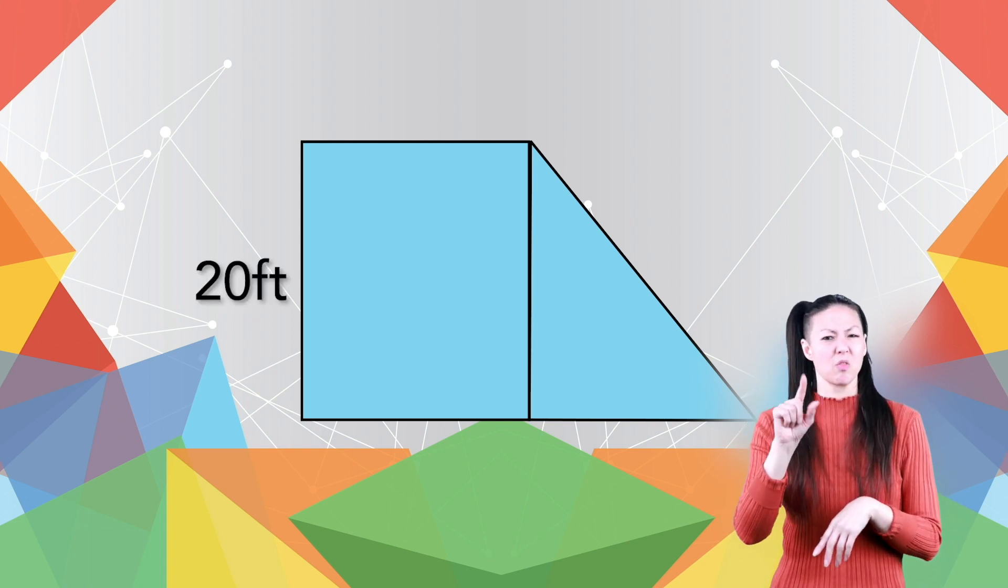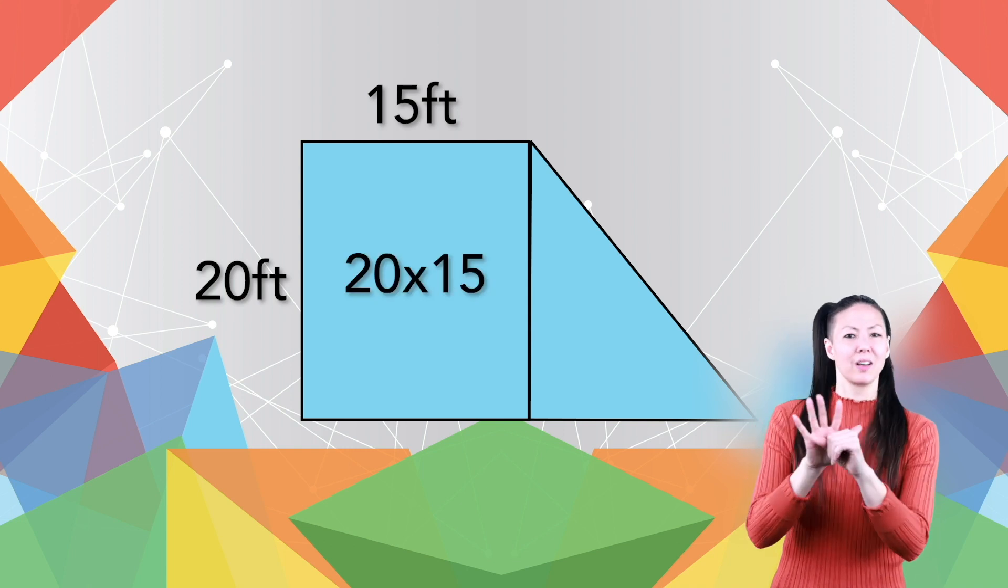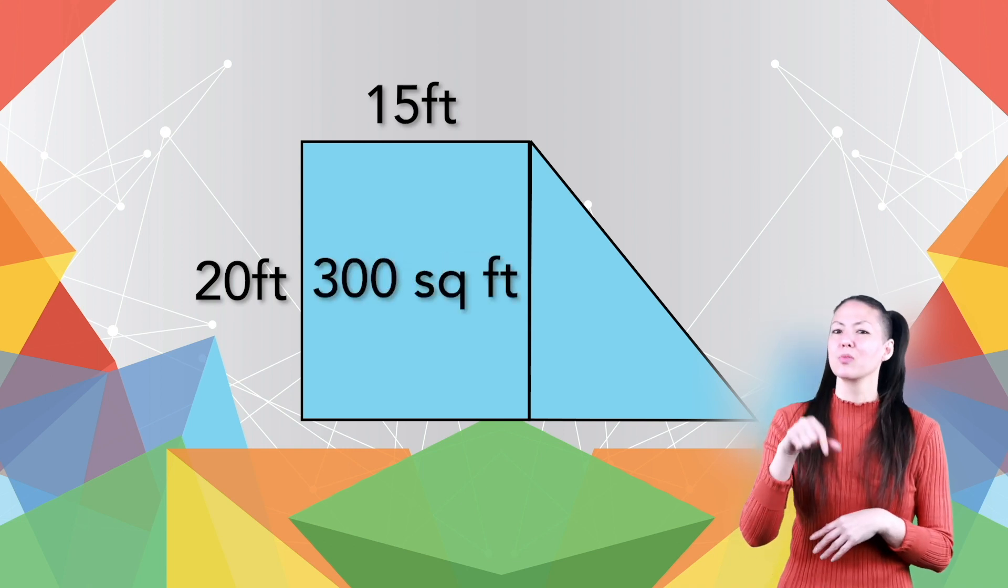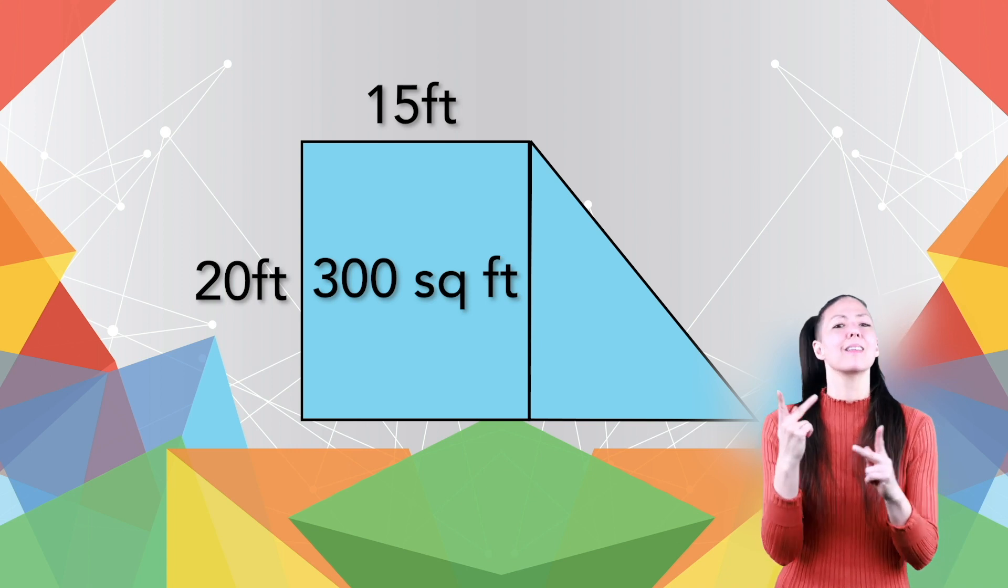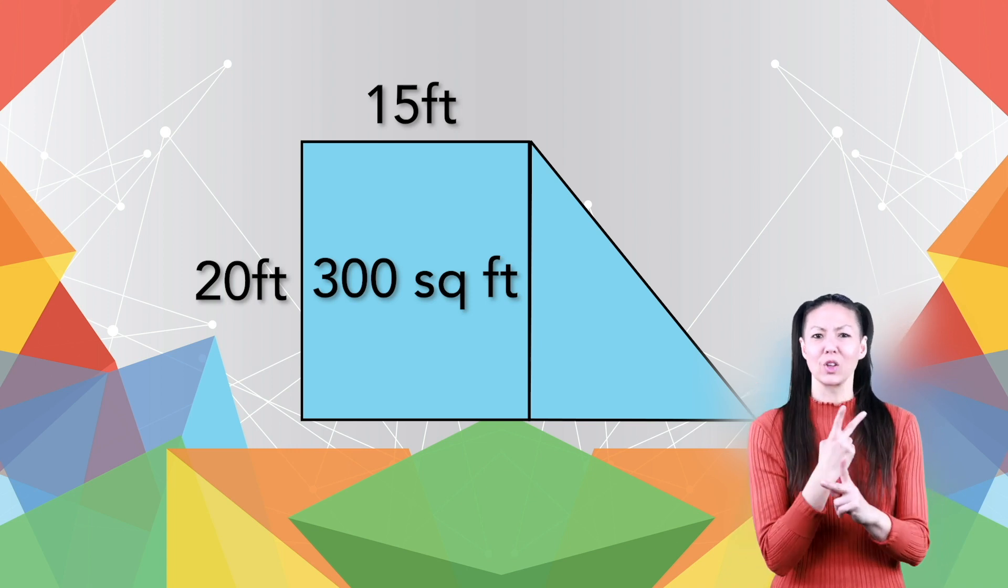The rectangle is 20 feet long and 15 feet wide, making its area 20 times 15, or 300 square feet. Next, to calculate the rest of the area, you'd have to know how to figure out the area of a triangle.